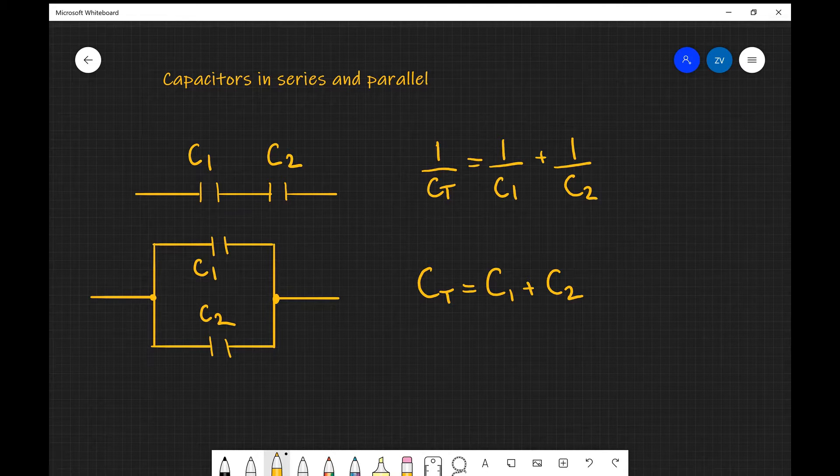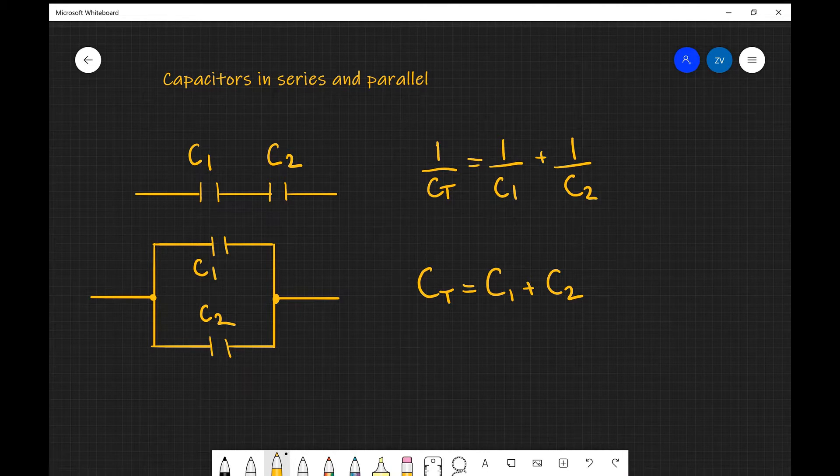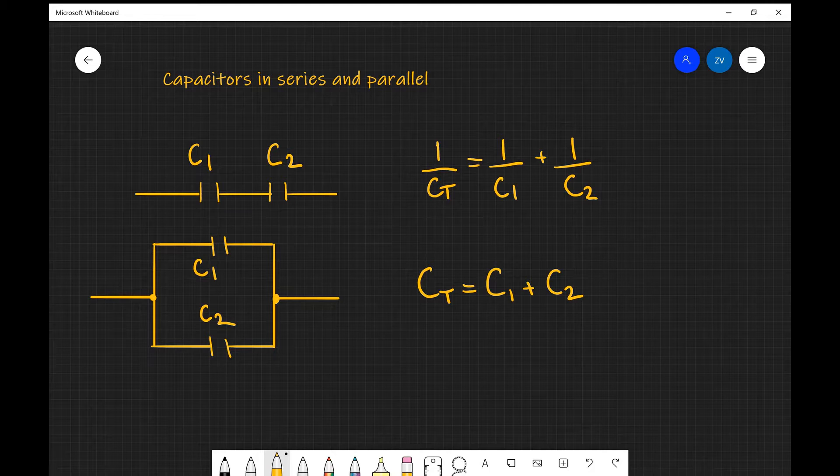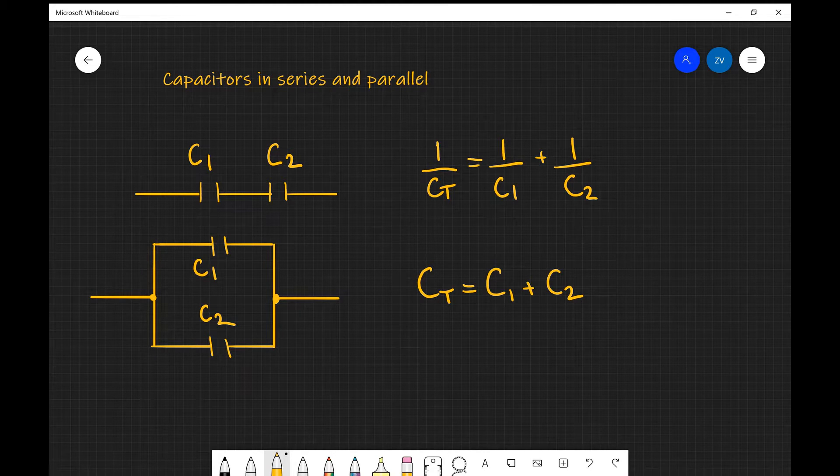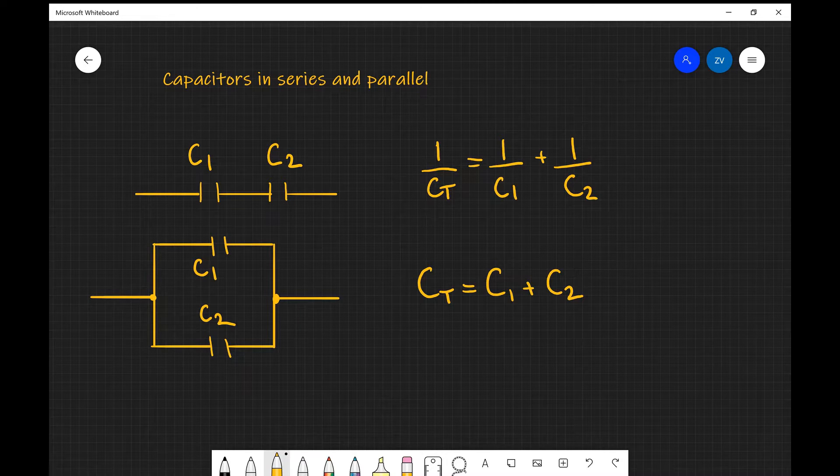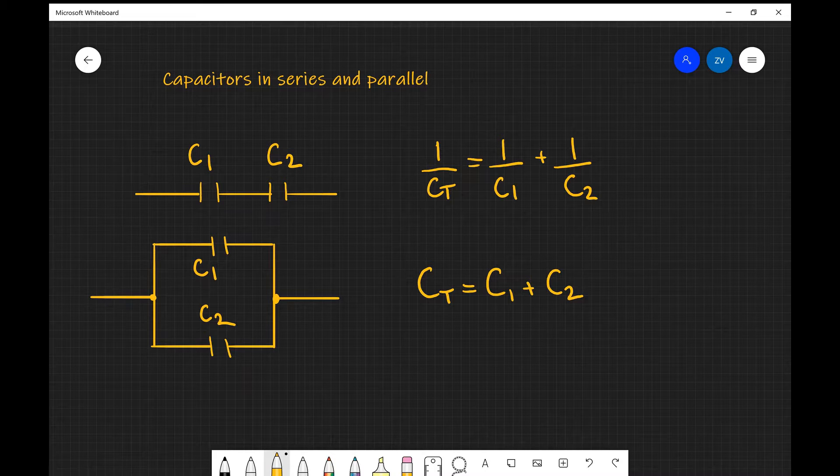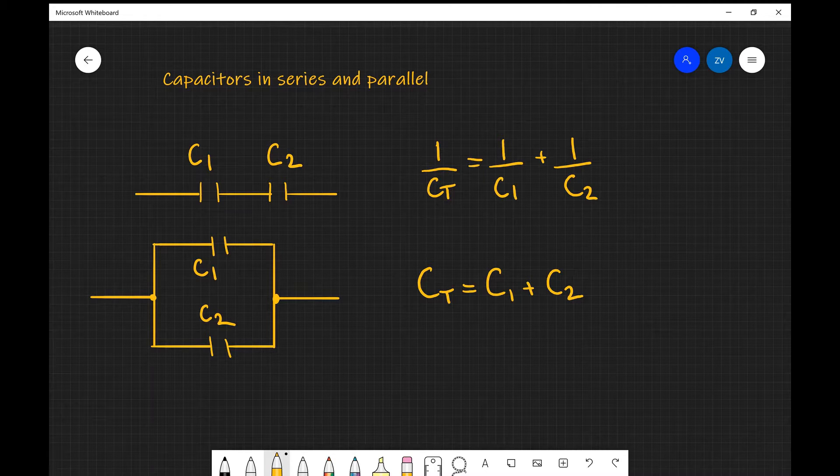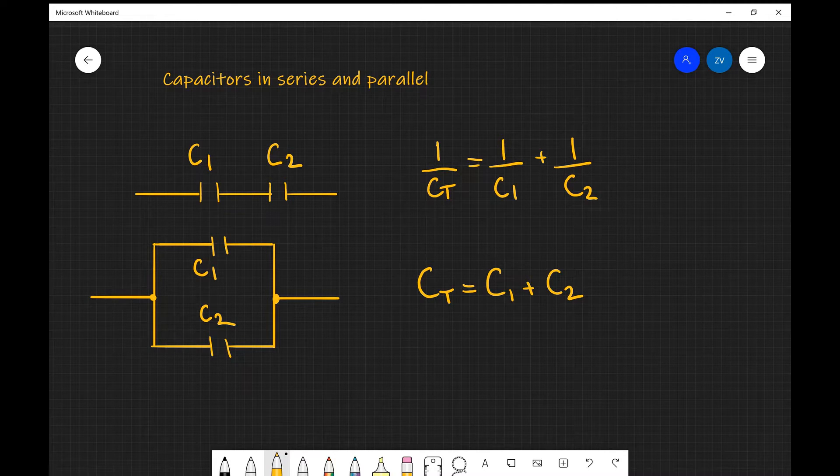So what we're going to be looking at today are capacitors in series and parallel. Now one thing to notice is that if we were to calculate the total capacitance if we have two or more capacitors connected together, the rules for that are pretty much the opposite compared to the rules for adding resistors.